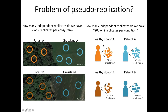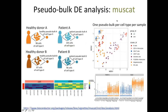So instead of treating 200 cells as 200 independent replicates, we actually have two independent replicates per condition. To compare differential gene expression between healthy and patient conditions, we aggregate the gene expression for each patient to get one representative value per independent replicate. This can be done using a package called MOSCAT, which performs pseudo-bulk analysis. For example, healthy donor A has 98 cells of cell type X — we create a pseudo-bulk of the gene expression profile for those cells, giving us one replicate.